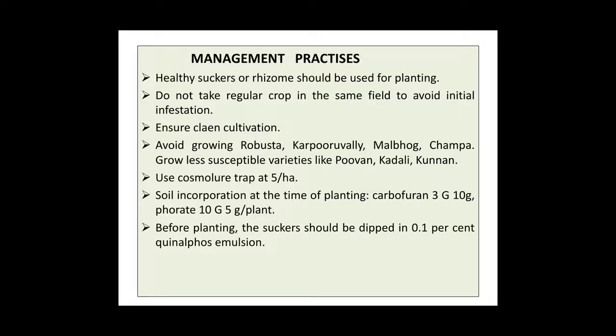Soil incorporation at the time of planting: Carbofuron 3G at 10 grams, or 4G/10G at 5 grams per plant. Before planting, the sucker should be dipped in 0.1% quinalphos emulsion. These are the control measures of the rootstock weevil.